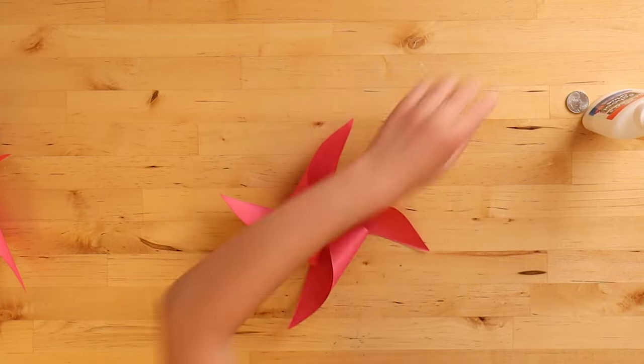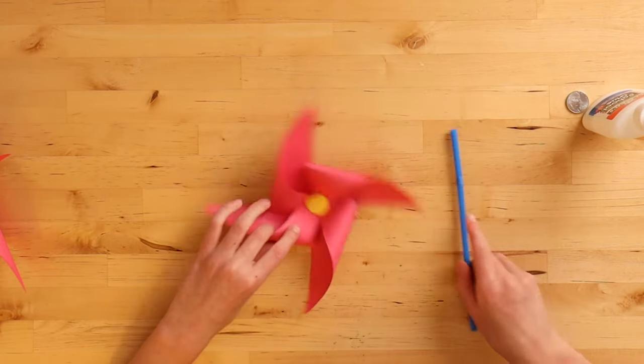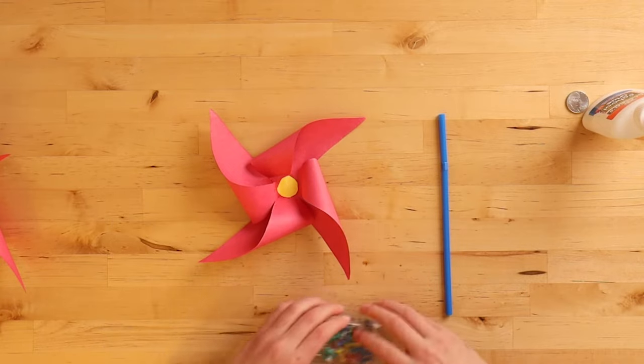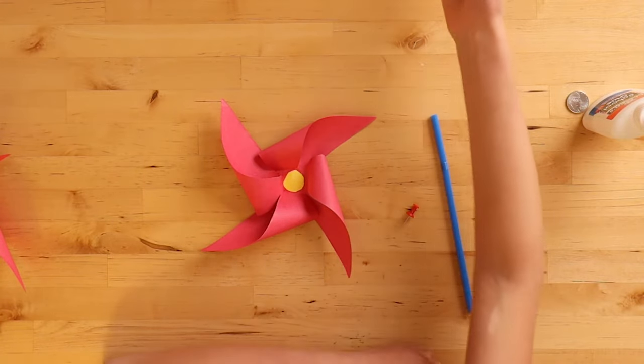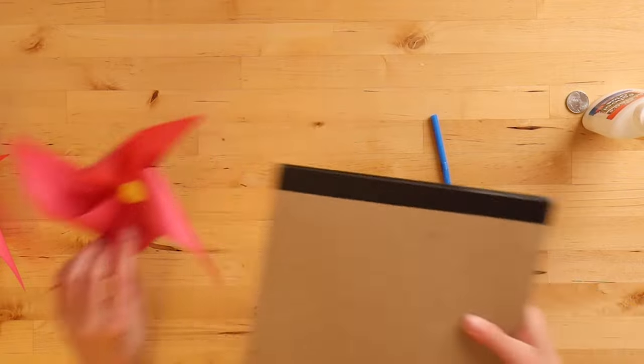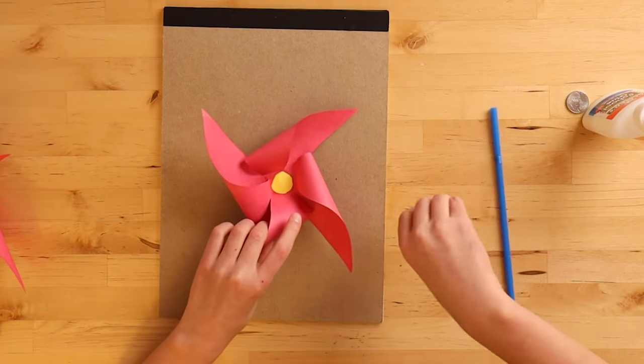So what we want to do is we want to get our straw and one thumbtack. I'm going to use the back of a notepad and you're going to put it on top just so you don't poke into your table.